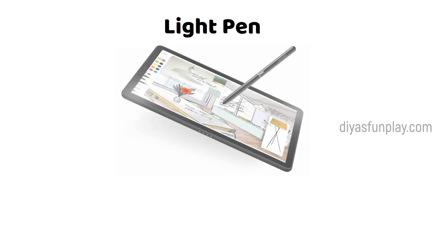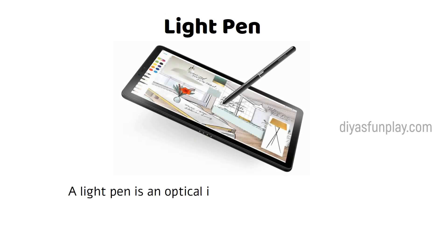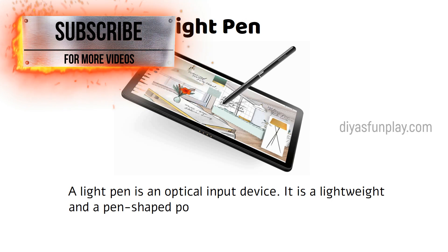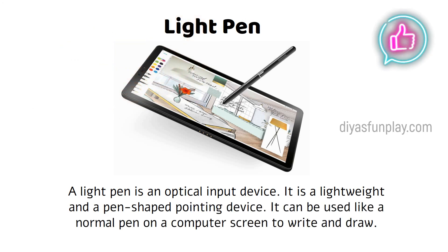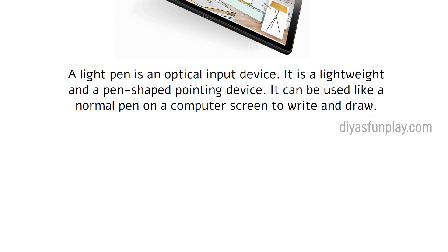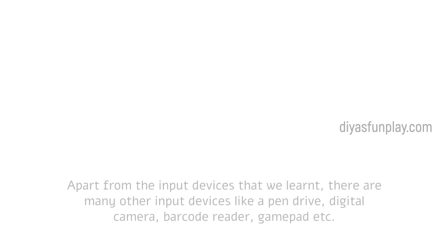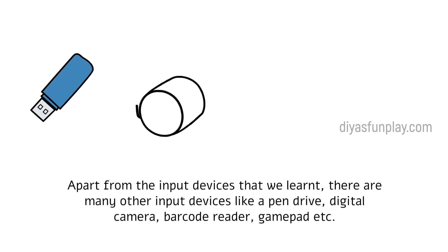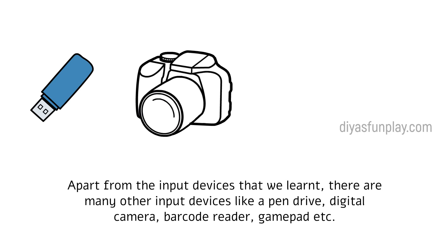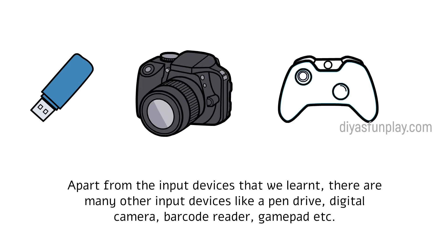Light pen. A light pen is an optical input device. It is a lightweight and pen-shaped pointing device. It can be used like a normal pen on a computer screen to write and draw. Apart from the input devices that we learnt, there are also many other input devices like a pen drive, digital camera, barcode reader, gamepad, etc.